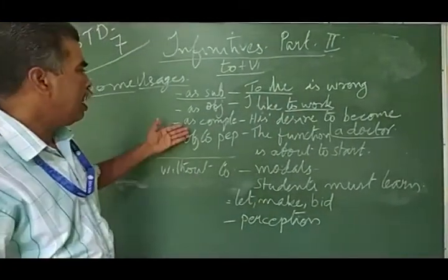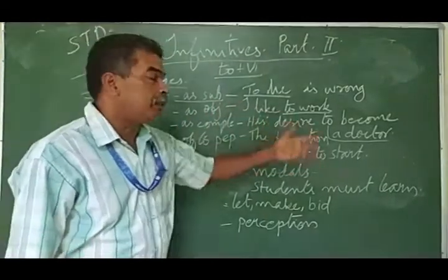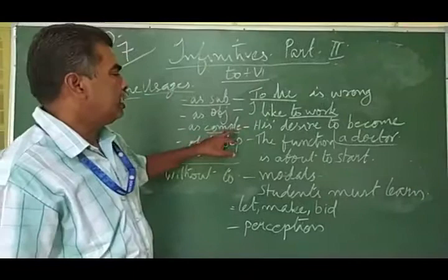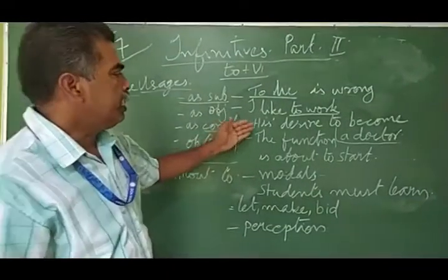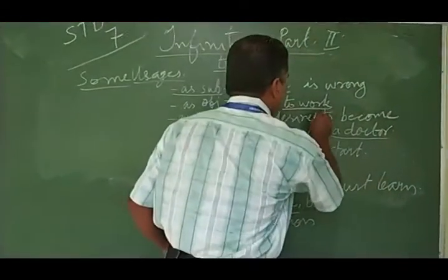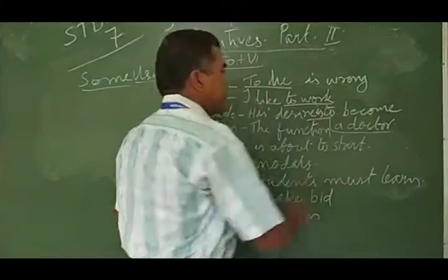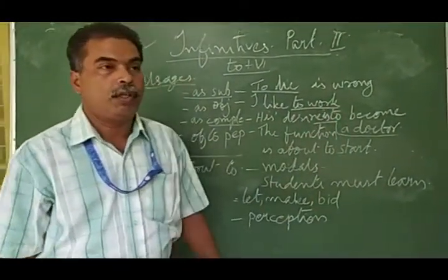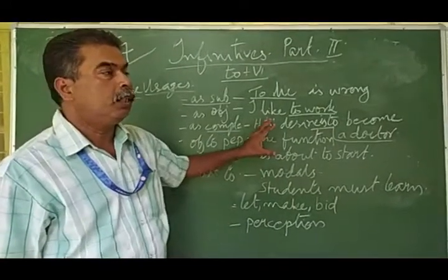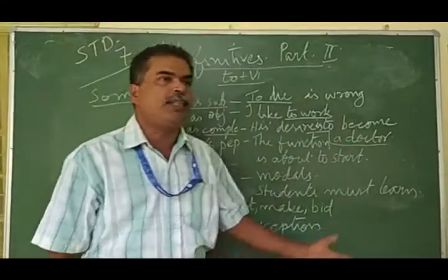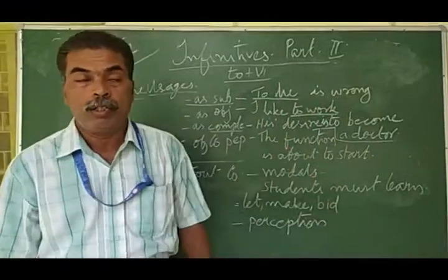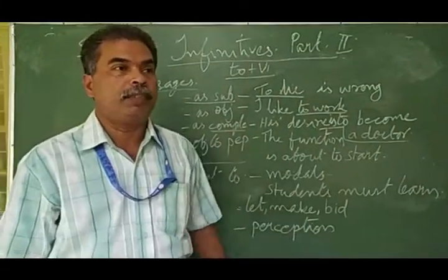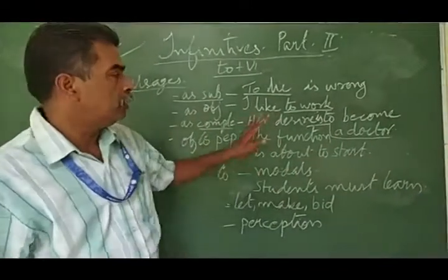As a complement - I didn't write the word completely here because I wanted to make it line like that. As a complement, his desire is to become a doctor. What is his desire? To become a doctor. We normally say, if you ask children what you want to be in your future: I want to be a doctor, I want to be an engineer, I want to be a pilot. So we use it as a complement.